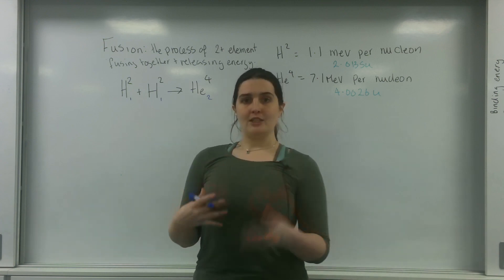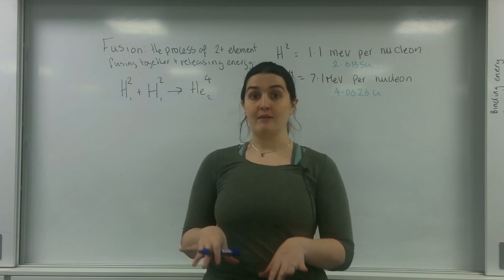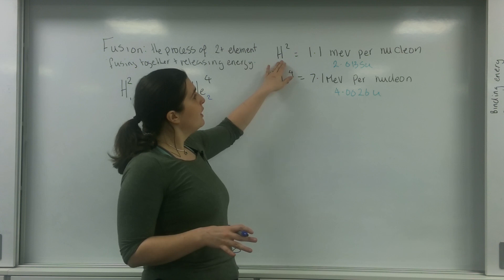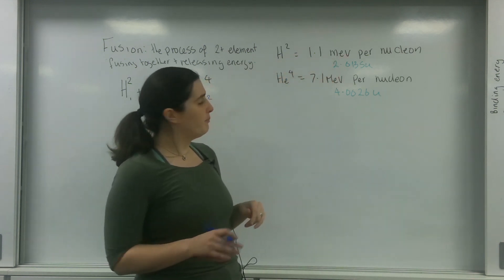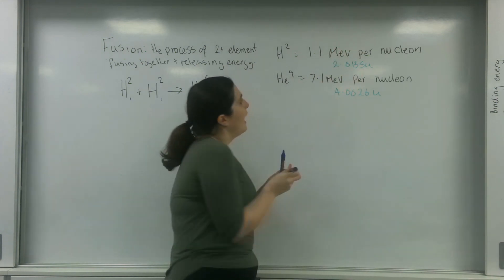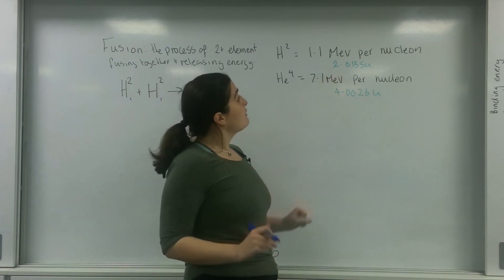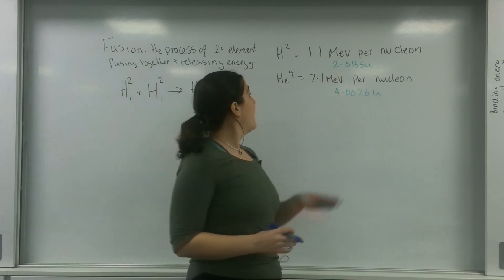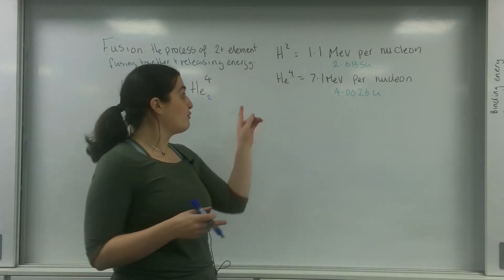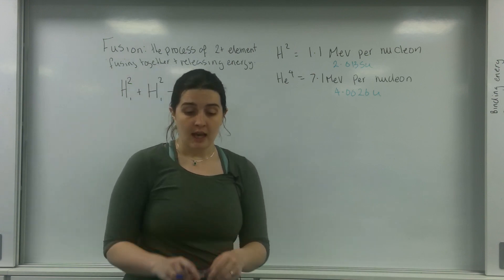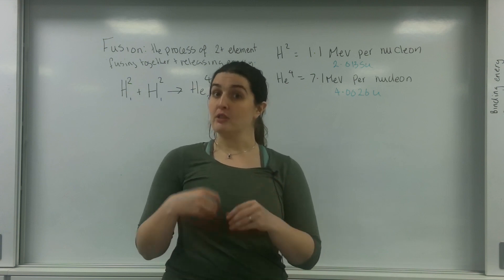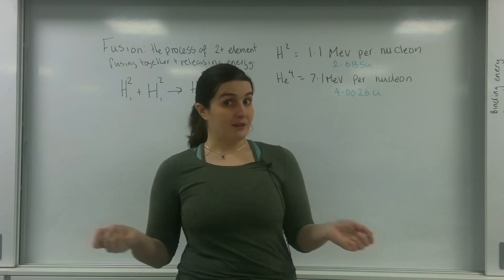And what I'm going to talk about is the energy release and I'm going to do this in two ways. I've been given two bits of information for each of the elements. I've been told that H2 has 1.1 mega electron volts per nucleon and its atomic mass unit is 2.0135U and my helium has 7.1 mega electrons per nucleon and has an atomic mass of 4.0026U. What I'm going to do now is show you how the energy is released and how the formula might look slightly different, but the answer should be the same.